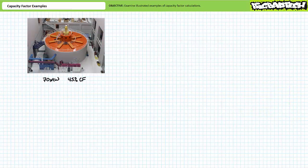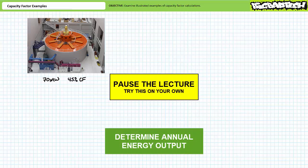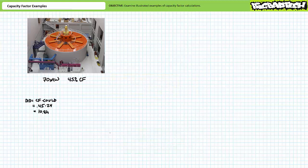Let's try some more practical examples of capacity factor. Consider a 70 megawatt turbine in a hydroelectric dam operating at a 45% capacity factor. See if you can determine how much energy this turbine would produce in one year — pause the lecture and try this on your own. If you're tracking, you should have obtained the following results. Capacity factor is a measure of how often the turbine runs at full capacity. A figure of 45% means the turbine runs at full capacity for 45% of each 24-hour day, or roughly 10.8 hours.